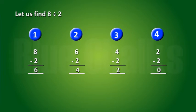Subtract 2 again and again from 8 you will see that in 4 moves you reach to 0. So we write 8 divided by 2 is equal to 4.